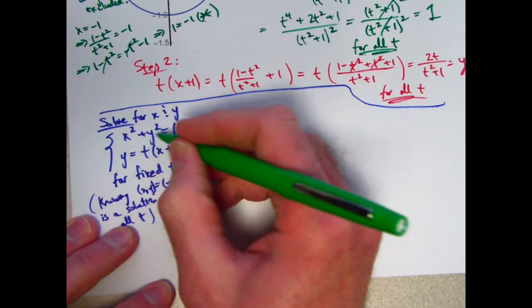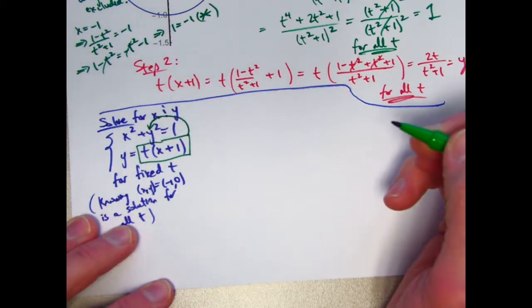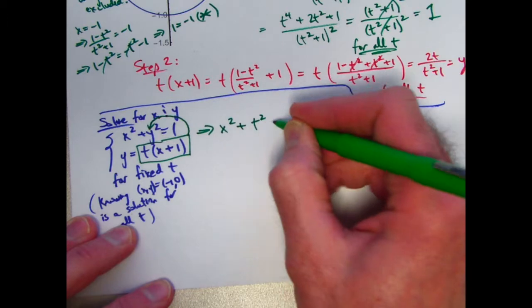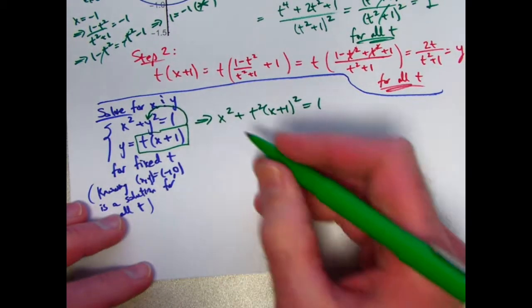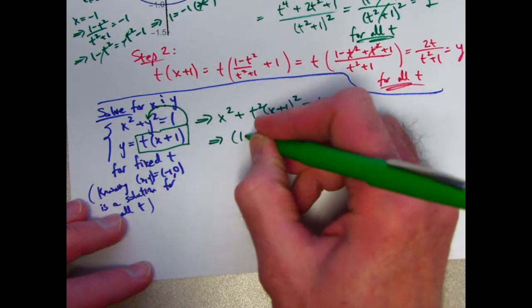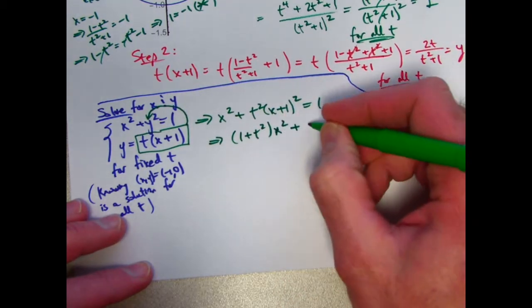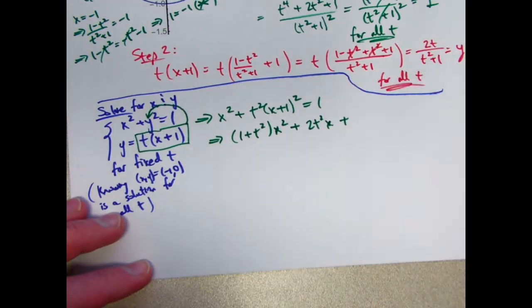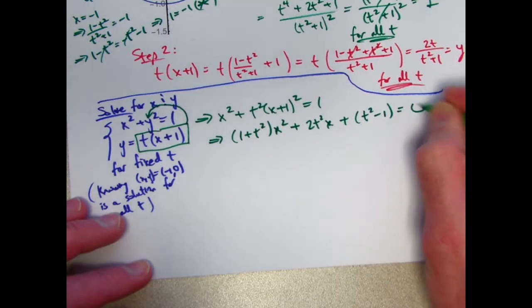You can replace the y in this equation with this expression. So take x² + (t(x+1))², and replace y with that. So we get x² + t²(x+1)² = 1 to help me solve for x. This is now a quadratic in x. The coefficient of x² will be 1 + t². The coefficient of x will be 2t². And the constant term, after subtracting 1 from both sides to get 0 on one side, will be t² - 1.